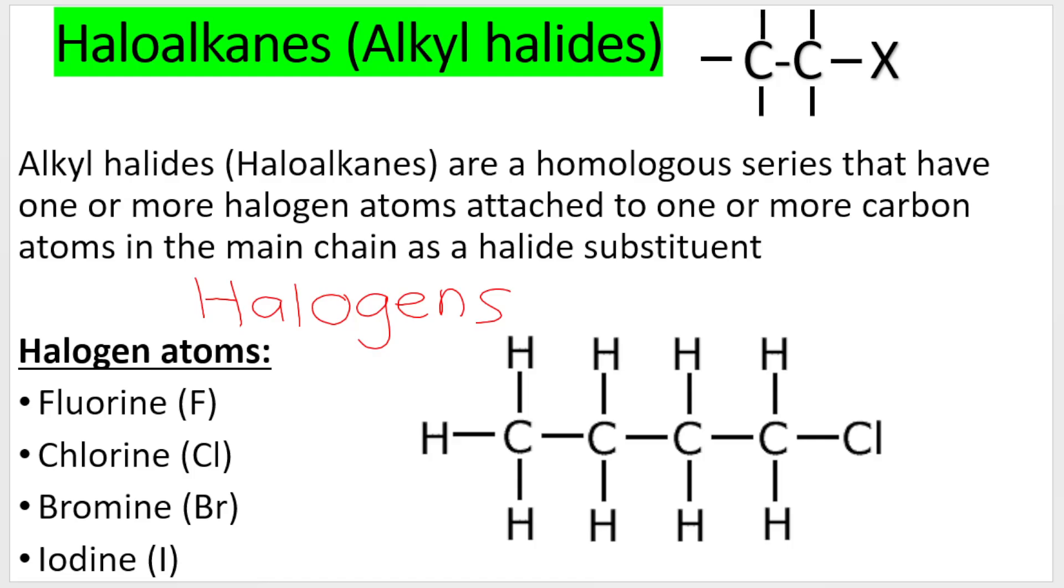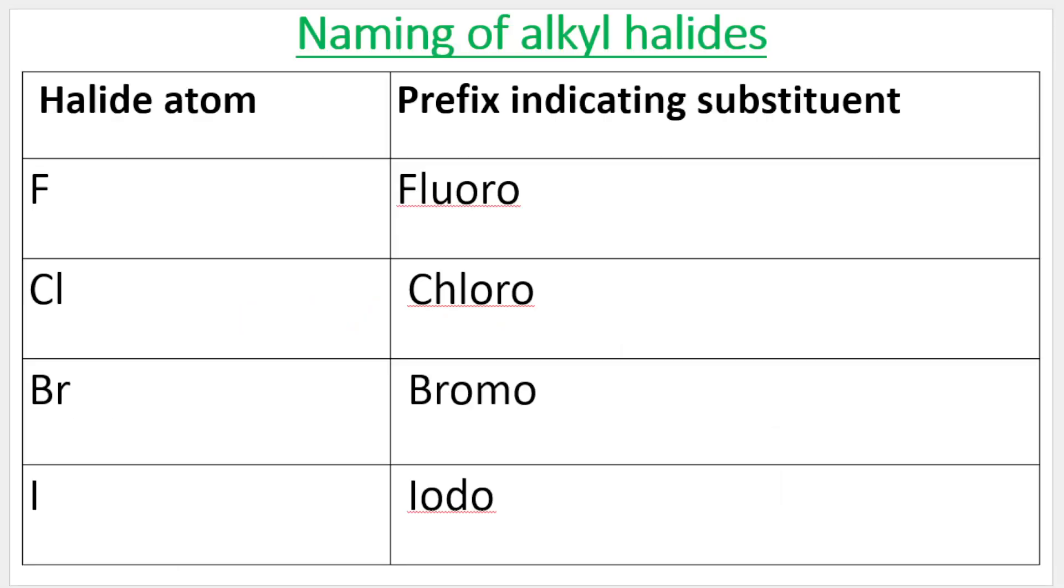On the screen, you can see an example of a haloalkane. If I have one or more halogen atoms on my chain, these are the prefixes that I will include in my name. So if you see F, it's fluoro, Cl is chloro, Br is bromo, I is iodo.